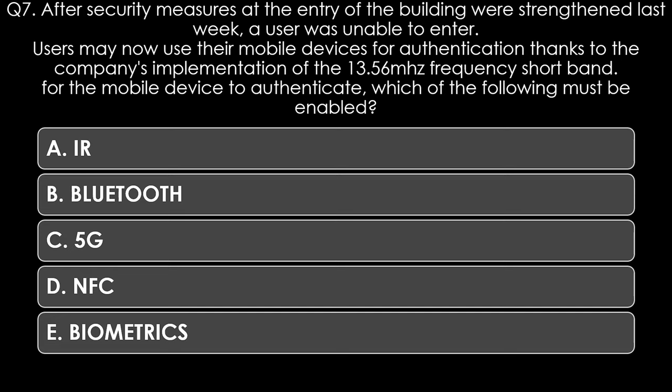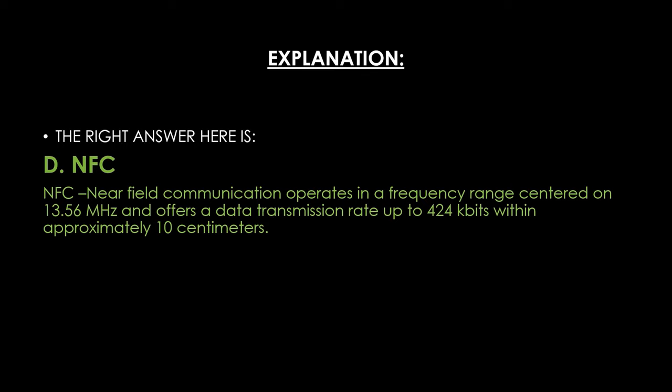Options: IR, Bluetooth, 5G, NFC, or Biometrics. The right answer is NFC. Near Field Communication operates in a frequency range centered on 13.56 MHz and offers a data transmission rate up to 424 kbps within approximately 10 cm.